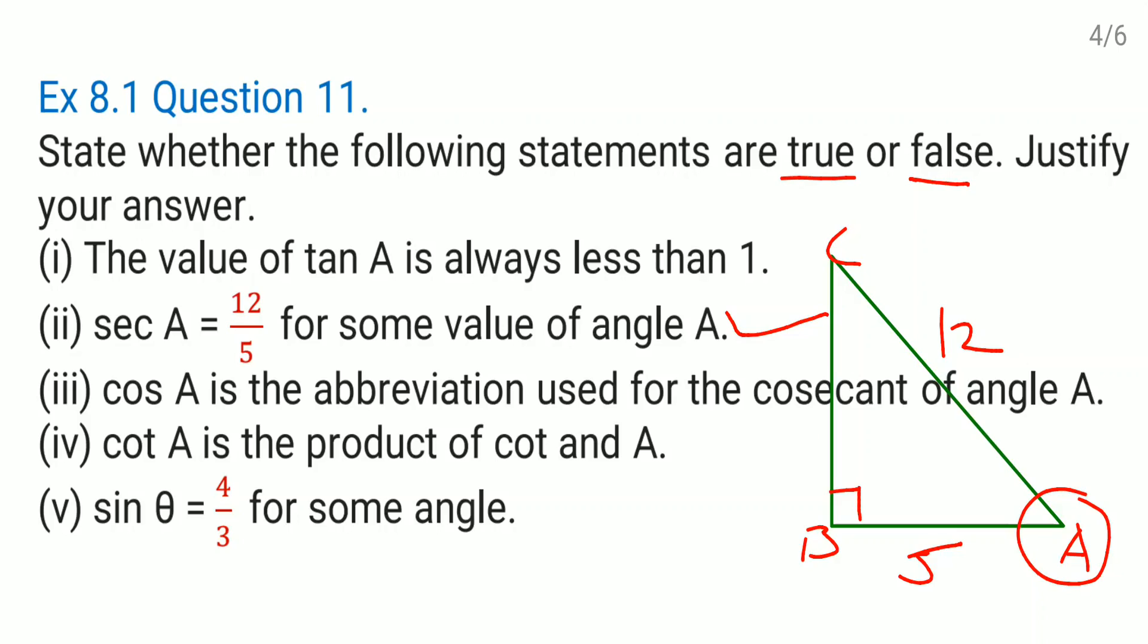Okay, now come to the fifth one: sine theta, which is equal to 4 by 3. So we'll name one angle as theta. Suppose this angle is theta. Sine means what? Opposite by hypotenuse. So this is the opposite and this is the hypotenuse. Now you only see here: hypotenuse is smaller than the opposite side. Is that possible?